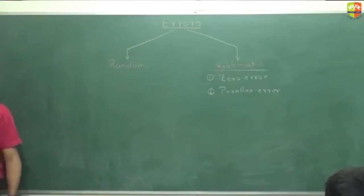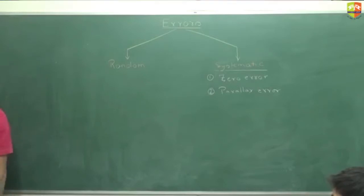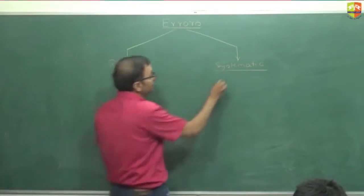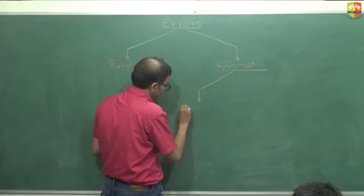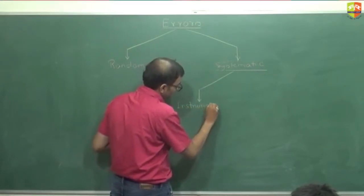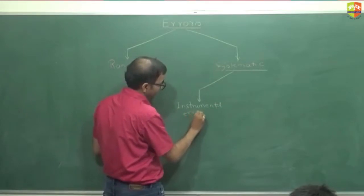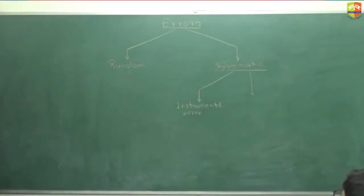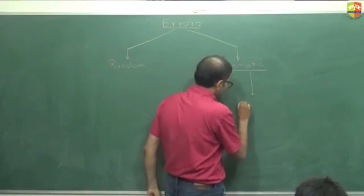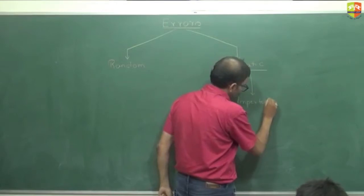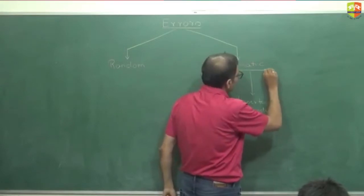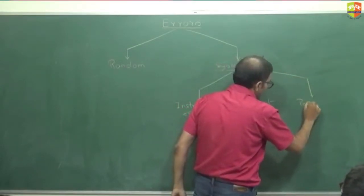In your textbook it is systematically written. There are three parts of systematic error. Write down: first, instrumental error. Second, imperfect experimental procedure. And third, personal error — you have personal bias.